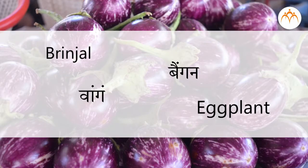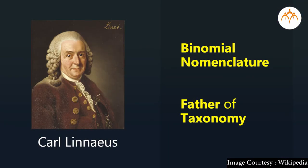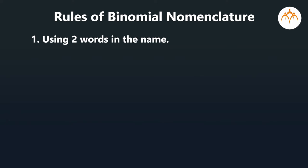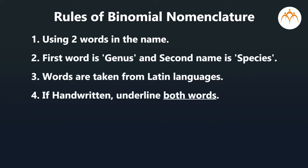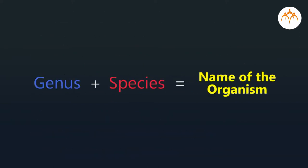In this video, we have seen the limitations of using common names to identify organisms. Therefore, the binomial nomenclature system was introduced by Carl Linnaeus. Now you are also familiar with the rules of binomial nomenclature. Hereafter, try to find the scientific names of different organisms around you, and follow this system of nomenclature while writing their names.